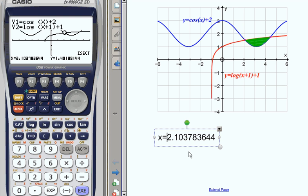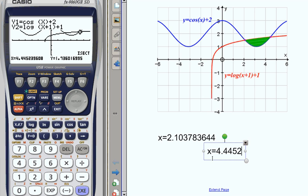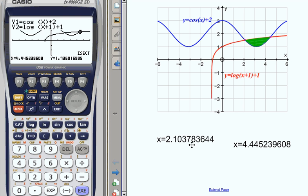And the second one, we find that, is x equals 4.445239608. So there are two x-coordinates for all the points of intersection. We've got, let's join them up. That one is that one there. And that one is that one there. So you can see which ones they are.